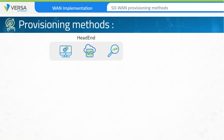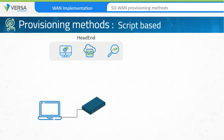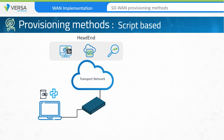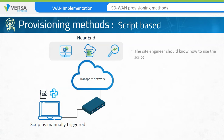Using scripts to automate CPE provisioning: this approach is focused on using Python or other shell scripts to create a basic configuration on the appliance. This temporary configuration makes a request to the orchestrator to trigger the bootstrapping procedure. The engineer at the site has to manually trigger this script with inputs based on the implementation, and is expected to know how to use the script and change parameters if required. This can be combined with two-factor authentication for additional integrity checks.